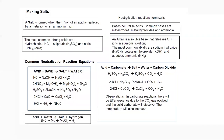Next, making a salt. The reactions of acids are used to prepare salts. The definition of a salt: when the hydrogen of an acid is replaced by a metal, a salt is formed. For example, NaCl comes from HCl — the hydrogen is replaced by sodium, giving a salt.